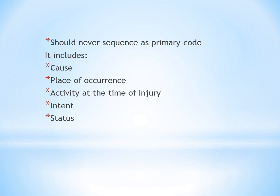When you get a patient chart, it contains information like the health condition or injury of the patient and what treatment was done. External cause codes give additional information about the situation: how the injury occurred, what the activity of the patient was at the time of injury, what was the location, what was the patient's status, and what was the intent. Since they provide additional information, they should never be the first code.